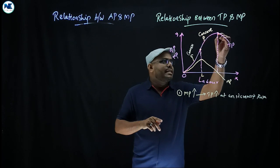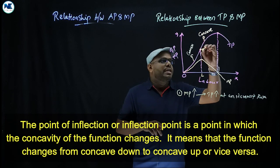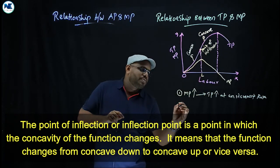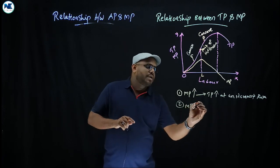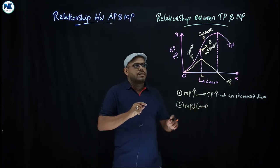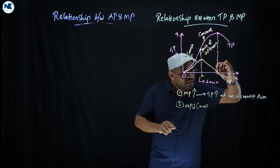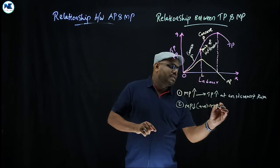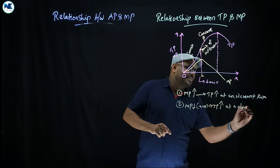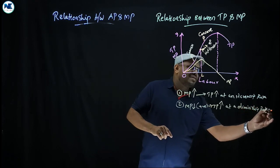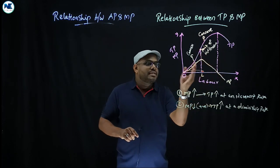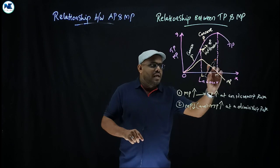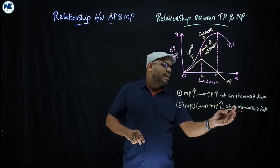This is the point of inflection, as described by the law of variable proportions. After this point, marginal product is declining but still positive. Total product is still increasing, but now increasing at a diminishing rate — this is the concave portion of the total product curve.